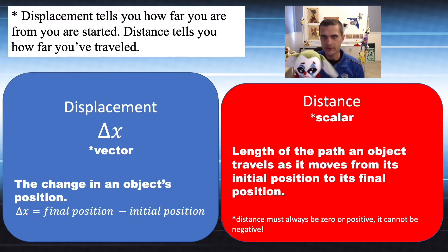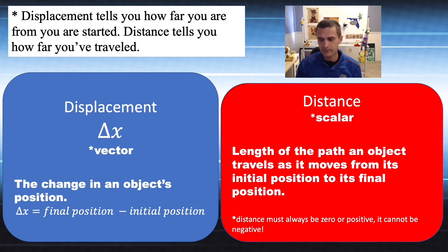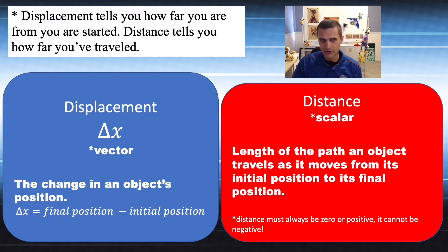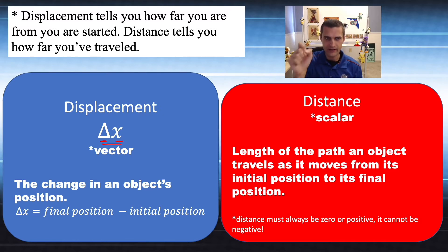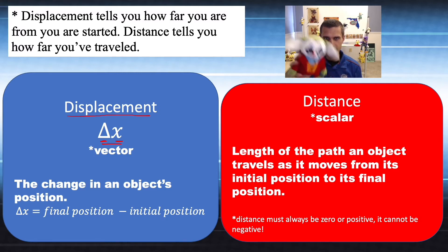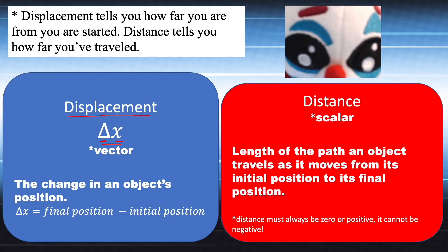Distance is the length of something's path that it travels, while displacement is its change in position. If you walk somewhere with a step counter, that counter tells your distance — how far you actually went — and that's a scalar quantity. Displacement looks at where you started and where you ended up, taking that difference. In physics, it's denoted as delta x — delta means change, and x stands for position. So delta x, change in position, is called displacement, and it equals final position minus initial position. Displacement is a vector; distance is a scalar.